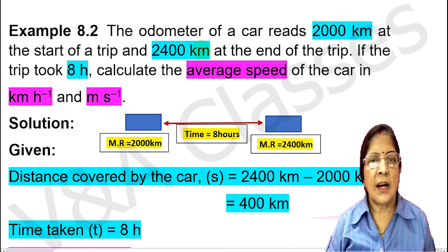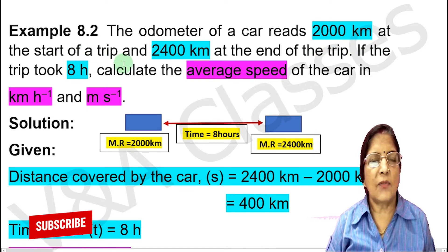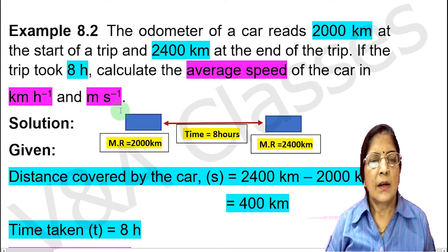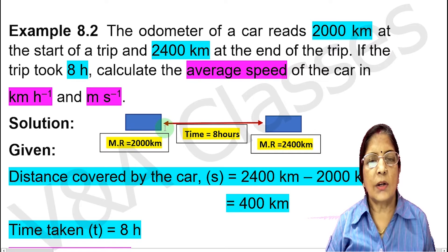The question is: the odometer of a car reached 2,000 km at the start of a trip and 2,400 km at the end of the trip. The trip took 8 hours. We need to calculate the average speed of the car in km per hour and meters per second.